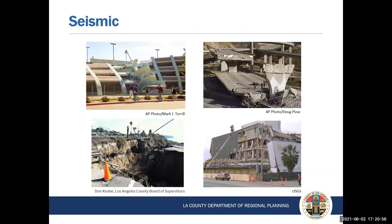Earthquakes are the first thing that comes to mind when you hear of seismic and geotechnical hazards. Earthquakes can cause ground rupture, unstable soil, and landslides. More than 50% of the unincorporated areas are comprised of hilly or mountainous terrain. Most hillside hazards include mud and debris flows, active landslides that occur below the surface, hillside erosion, and human-induced slope instability.